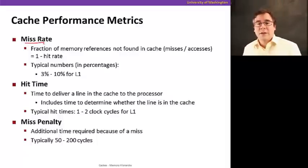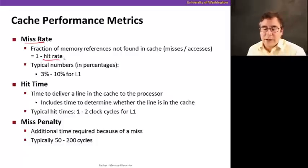The first one is called the miss rate. And the miss rate is a fraction of memory references that are not found in the cache. That's 1 minus the hit rate. So, the hit rate is a percentage of accesses that hit in the cache. So, 1 minus the hit rate is what we call the miss rate, which is the fraction of accesses that do not hit in the cache.